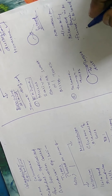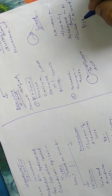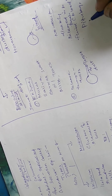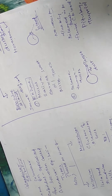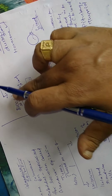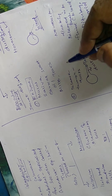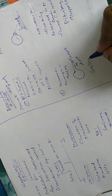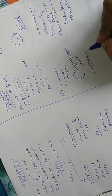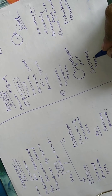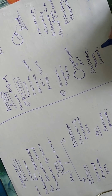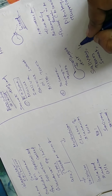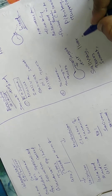Examples of endocrine glands: pituitary gland, thyroid gland, etc. Examples of exocrine glands: salivary gland, tear gland, sweat gland, liver, etc. Thank you.